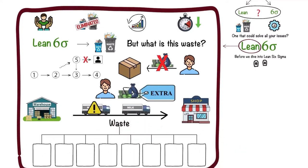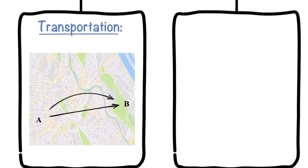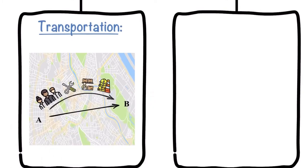Let's have a look at each of them. First, transportation. This waste refers to the excess movement of people, tools, inventory, equipment, and other components of a process than is required.